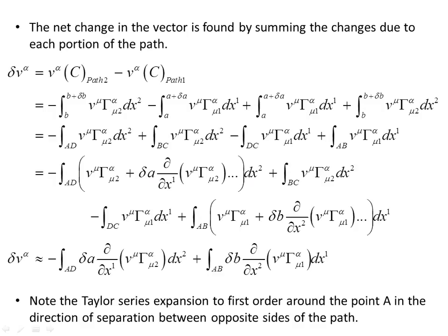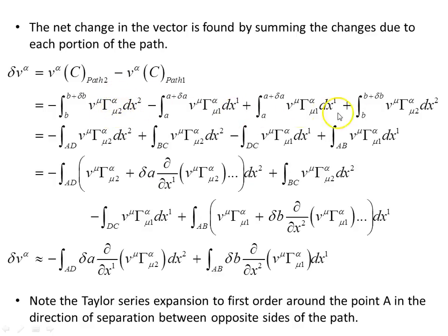The net change in the vector is found by summing the changes due to each portion of the path. When we arrive at point C, we take the change in the vector via path two and subtract the change via path one. In flat space this will be zero because the change in the vector at C will be the same whichever path you take. But in curved space it's not, because the basis vectors differ from point to point on the manifold. Collecting the dx2 terms and the dx1 terms together, we have the full expression.